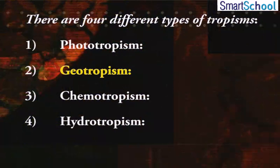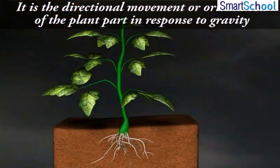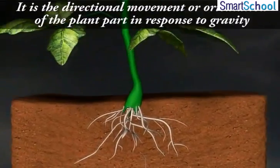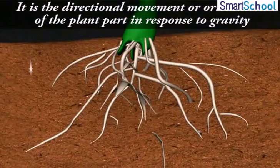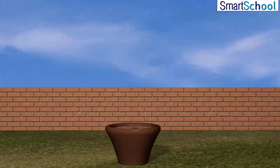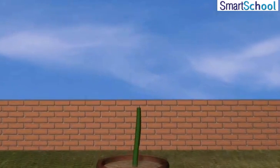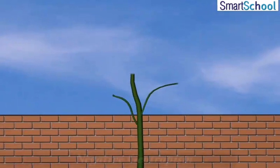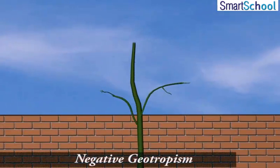2. Geotropism: It is the directional movement or orientation of the plant part in response to gravity. If the plant's part moves in the direction of gravity, it is called positive geotropism. Alternatively, if the plant's part moves against the direction of gravity, it is termed as negative geotropism.